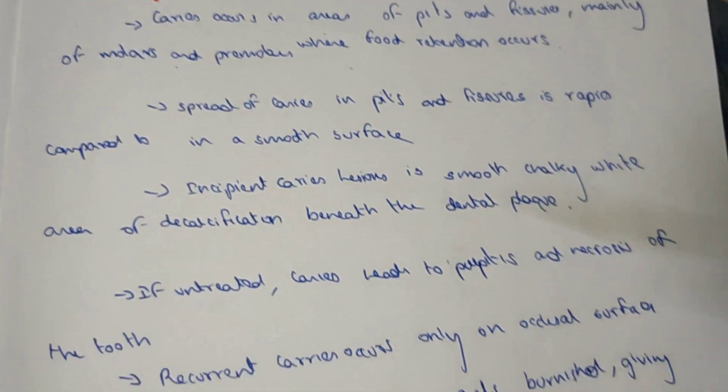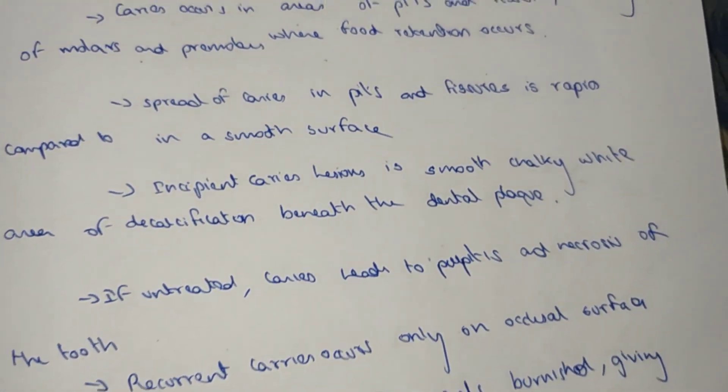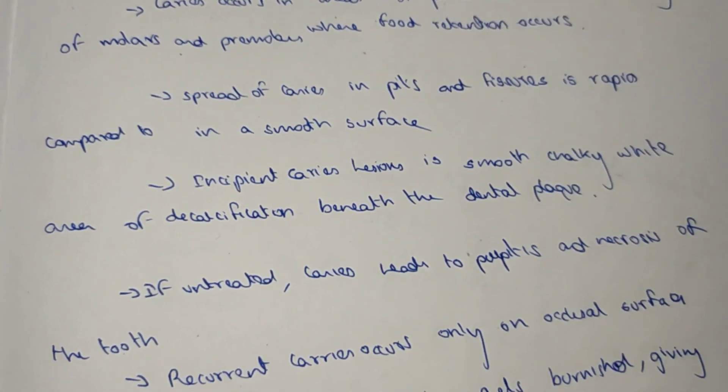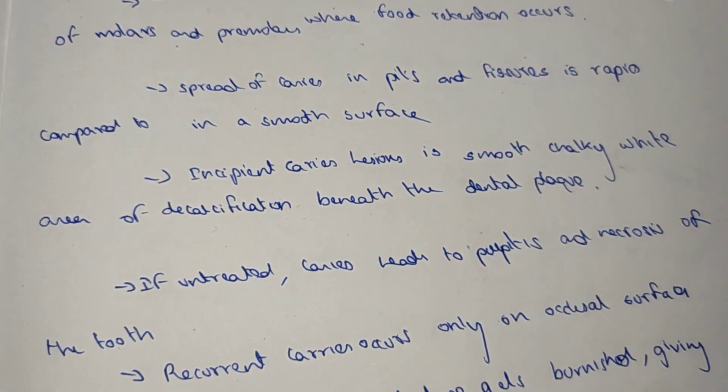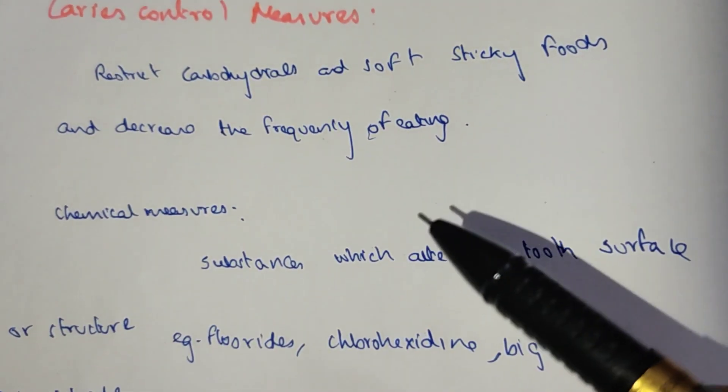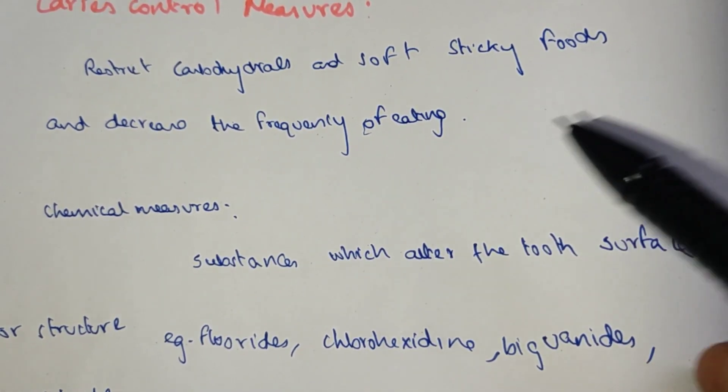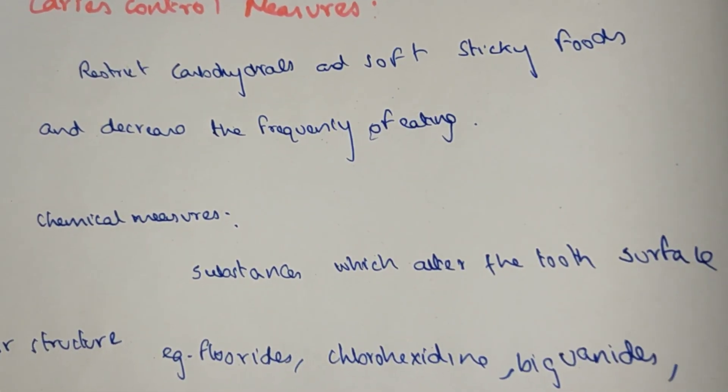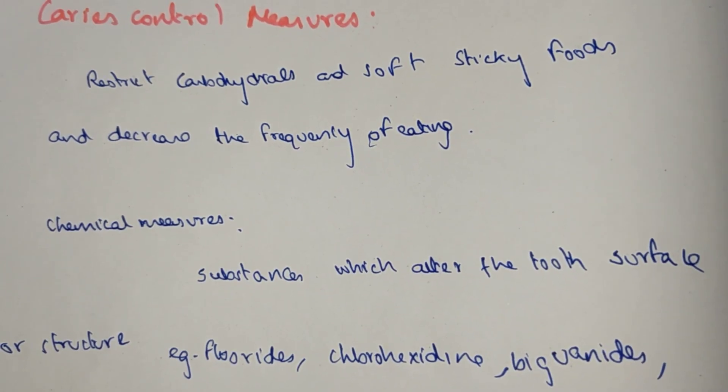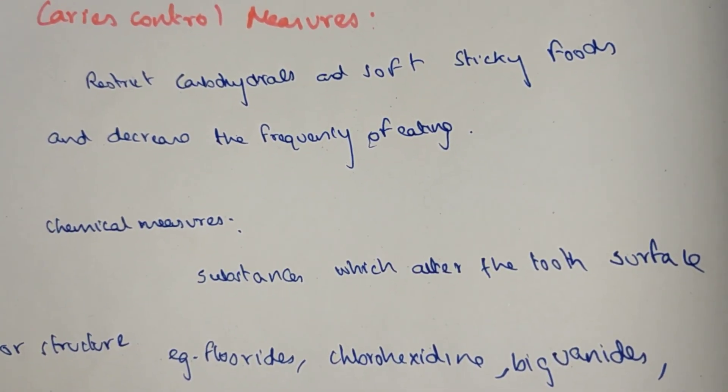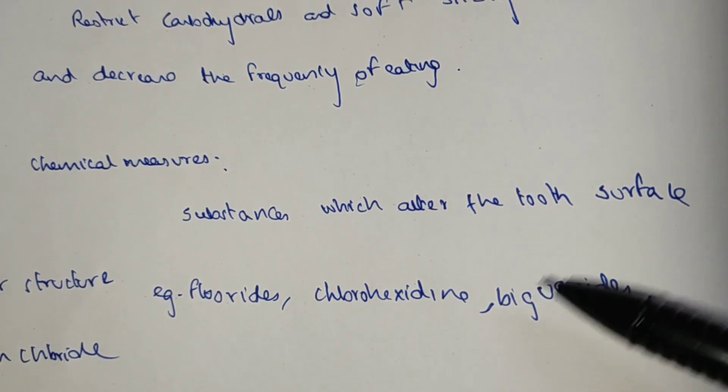These are the pathological changes in dental caries. Caries can be controlled by restricting carbohydrates and soft, sticky foods. Since the etiology is dietary, control can be achieved through chemical measures.